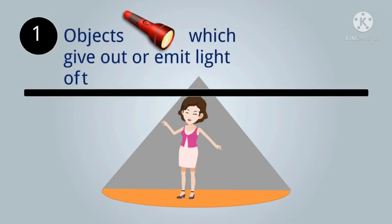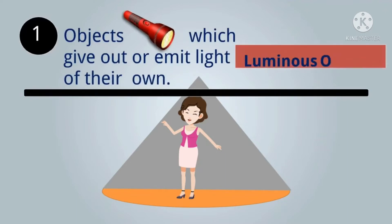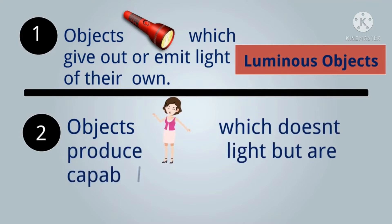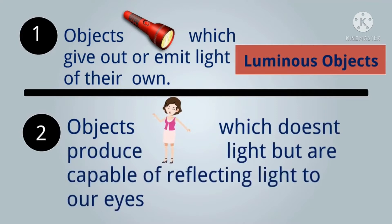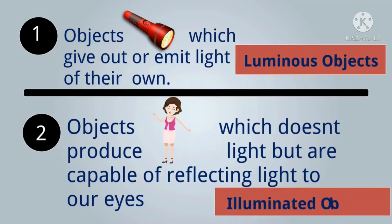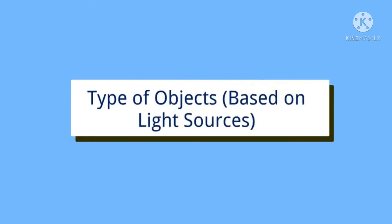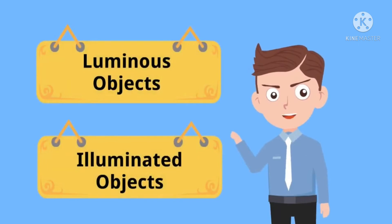Here there are two distinct things. One: objects which give out or emit light of their own are called luminous objects. And second: objects which do not produce light but are capable of reflecting light to our eyes — these objects cannot produce light by their own — are called illuminated objects.